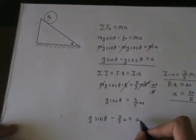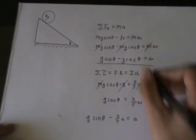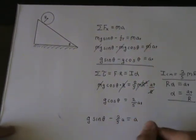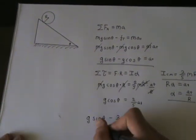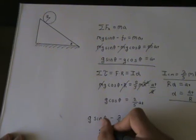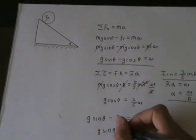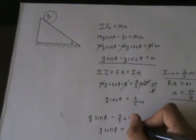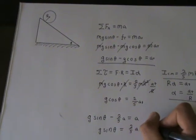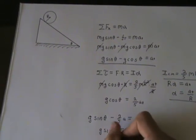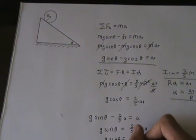Remember, this is acceleration tangential, so this was always acceleration tangential. Now we can just use basic algebra to solve for a. We're going to get g sine theta is equal to 2 fifths a plus a. So g sine theta is equal to 7 fifths a.